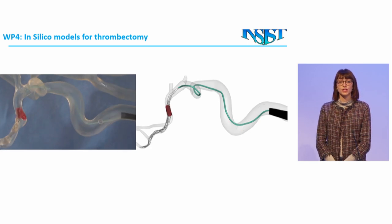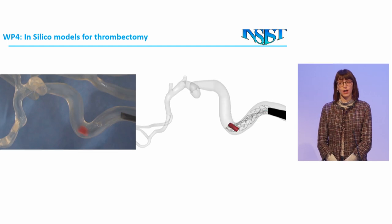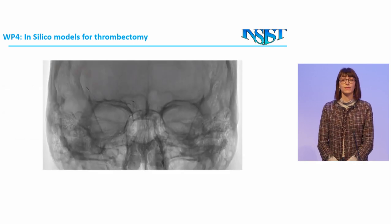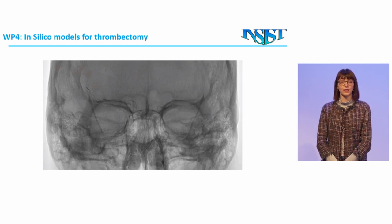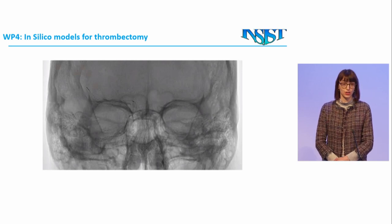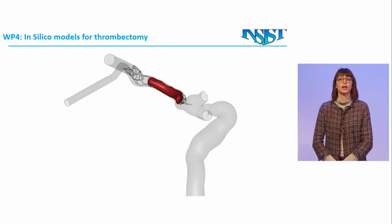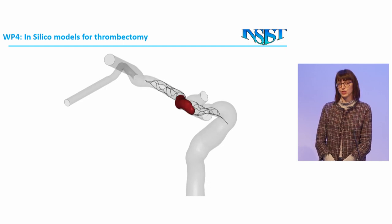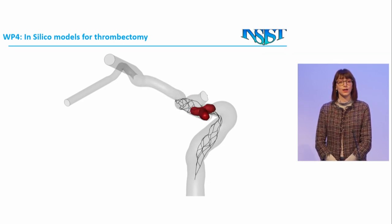In this case the clots reach the end of the vessel with no fragments at all. We also developed a patient-specific platform to reproduce patient-specific thrombectomies. Starting from the images we reconstruct the vessel geometry and the clot geometries, and we select the correct clot properties in terms of composition and mechanical properties. We then perform exactly the same procedure as for the patients, observing the stent position with respect to the clots, and reproduce it virtually — performing the thrombectomy procedure with a successful outcome for these patients.